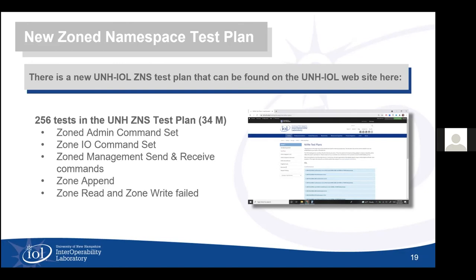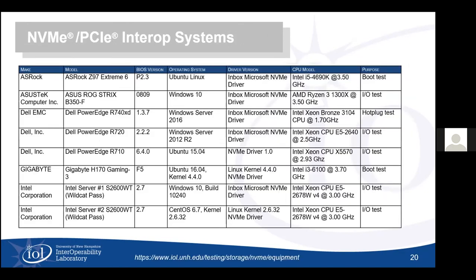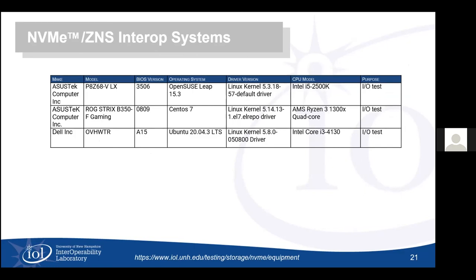For PCIe interoperability, these are the systems we're using — they haven't changed since the June Plugfest. New for this event are three systems we're working with to do ZNS interoperability. This is the first time we'll be doing interoperability for ZNS products, so we wanted to make sure the systems used for that interop testing were appropriate. This list will grow, and you'll be able to get a copy of this with the webinar slides.